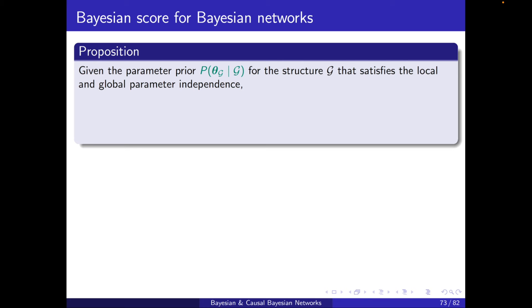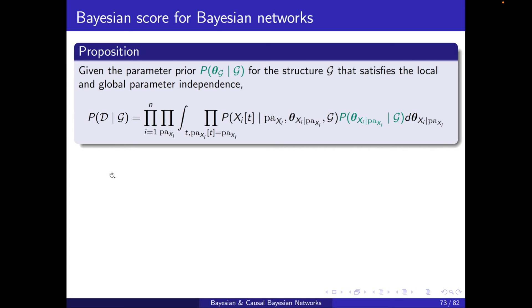Given a parameter prior p(theta_g | g) satisfying both local and global parameter independence, the marginal likelihood can be factored: for i from 1 to n over the variables, and over the parent configurations of xi, we compute the integral over theta of the product over instances whose parent pattern matches — of p(data | parents, theta) times the prior p(theta | g).